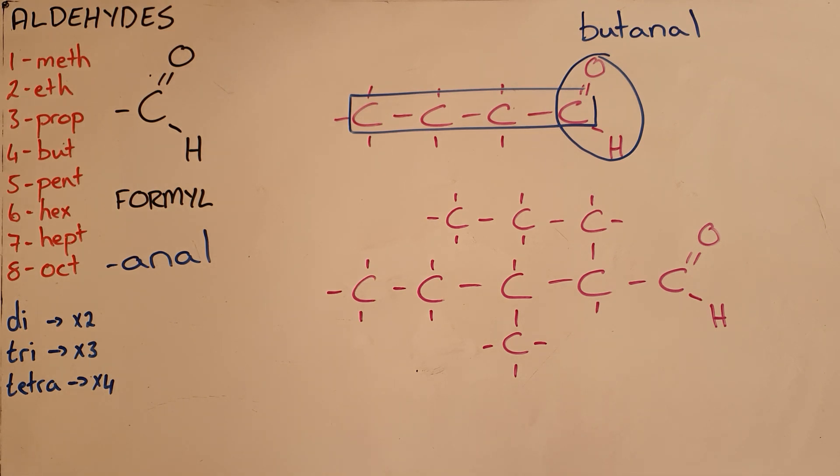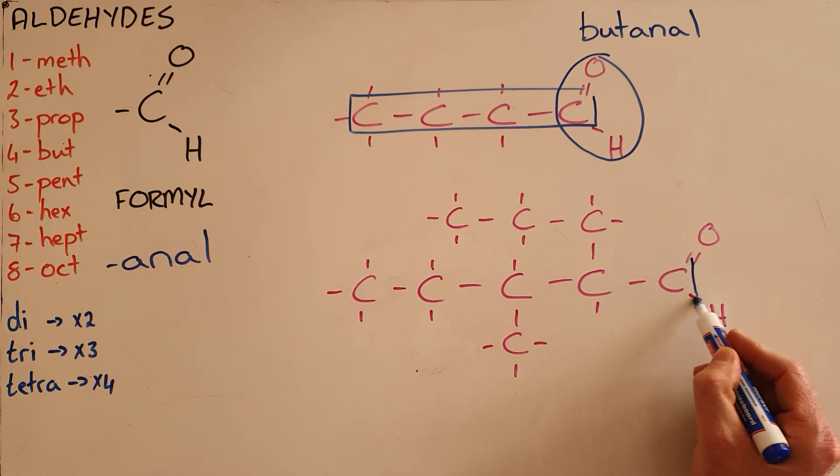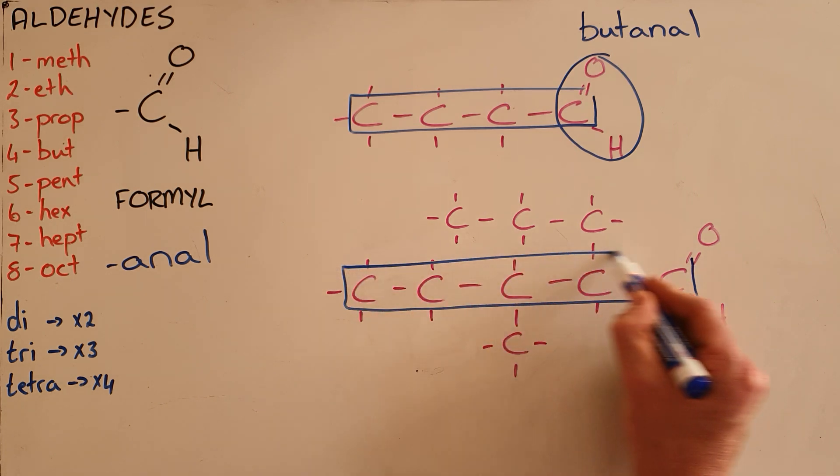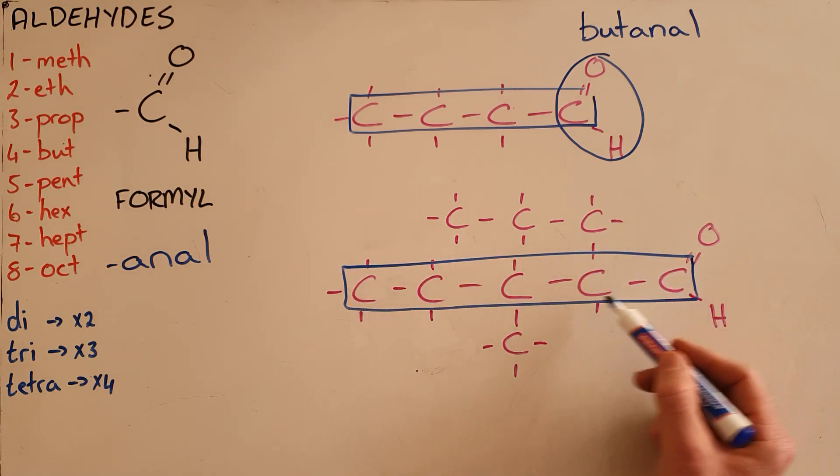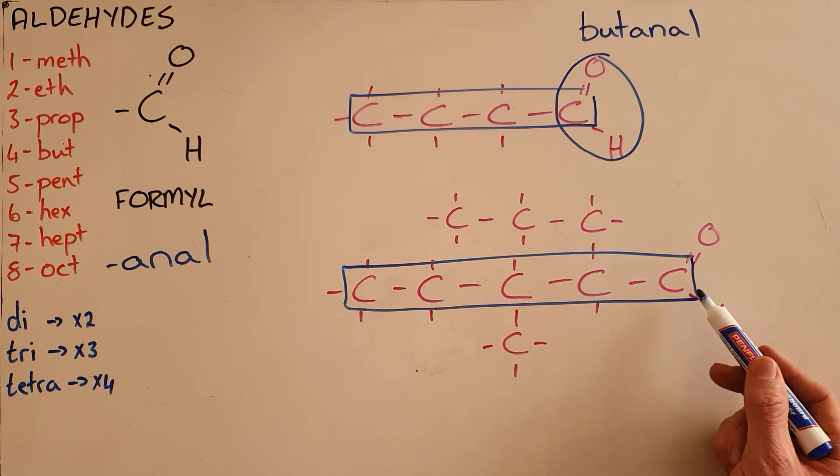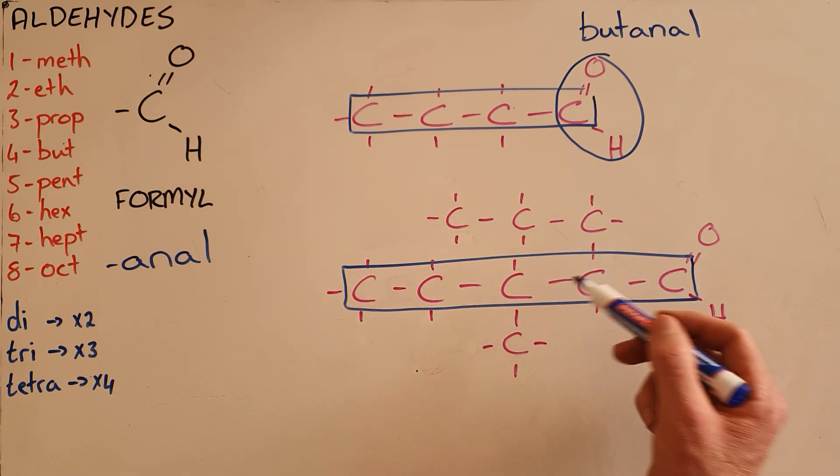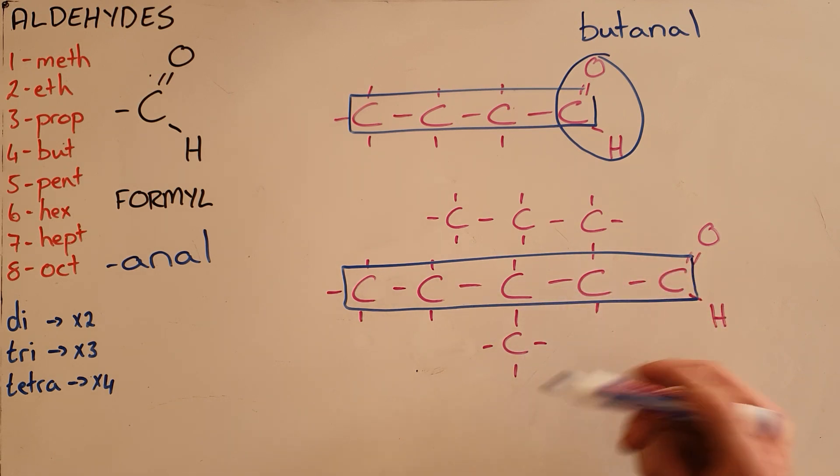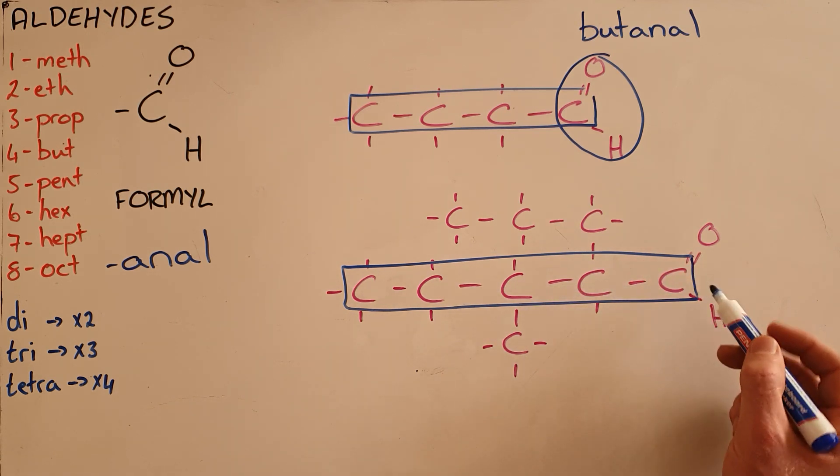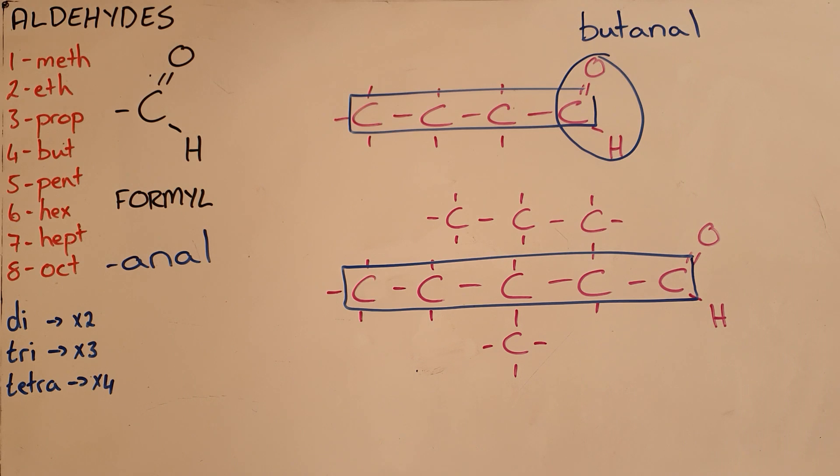We can see this with a slightly more complicated molecule where we identify our longest carbon chain. It was also possible to identify this as the longest chain, but that would create a branch that has a branch off it, which is unnecessarily complicated, so we choose the longest carbon chain possible.